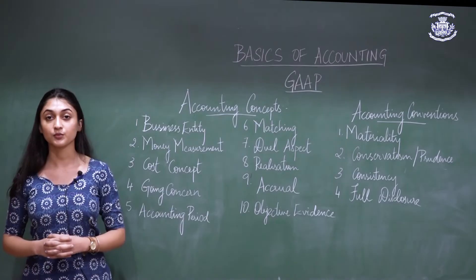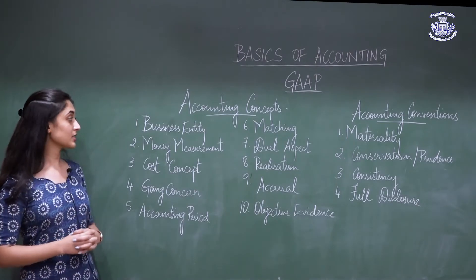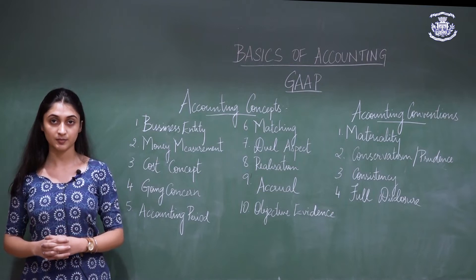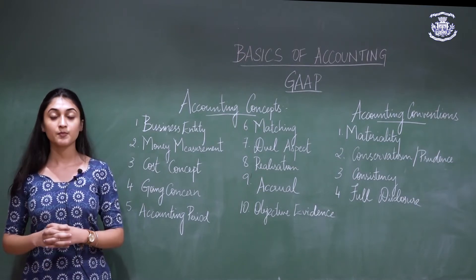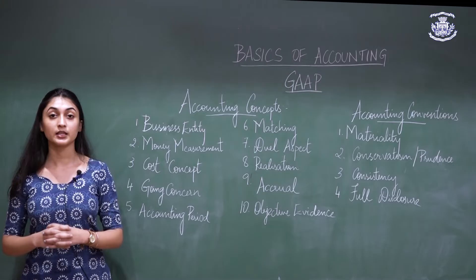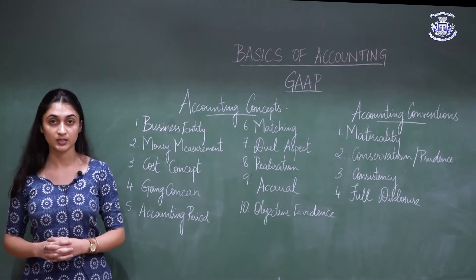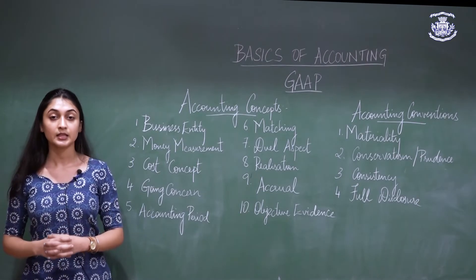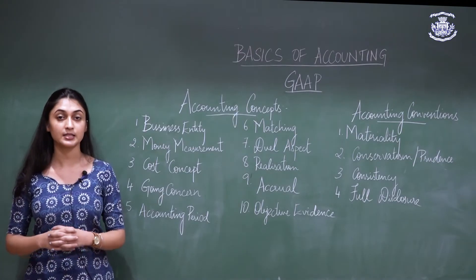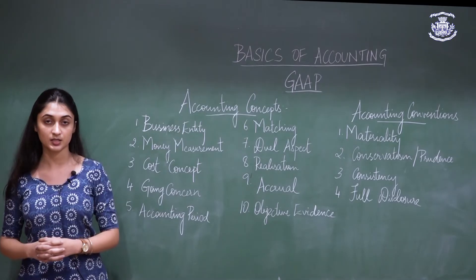We will now look into the accounting concepts. The first accounting concept is the business entity concept. The business entity concept states that the owner and the business are two separate units — the assets and liabilities of the owner are separate from the assets and liabilities of the business.